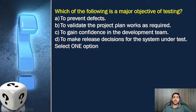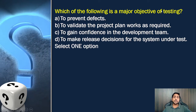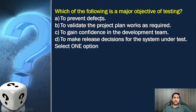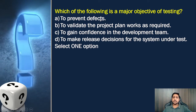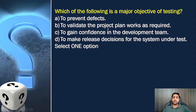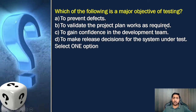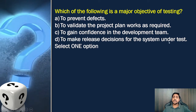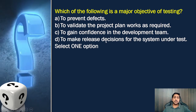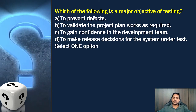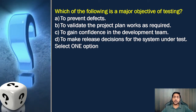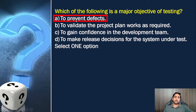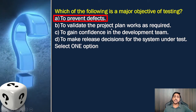A practice question: which of the following is a major objective of testing? The answer is to prevent defects by evaluating work products. To evaluate the project plan to see it works as expected or required — that is not a testing objective. To gain confidence in the team — not an objective. To give information for a release decision about the item under test — we do provide information, but the release decision is made by someone else, not by us. So the answer is to prevent defects.